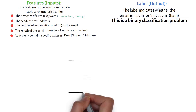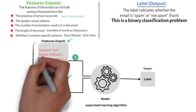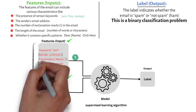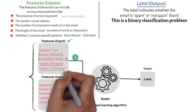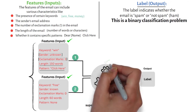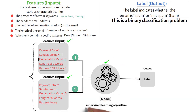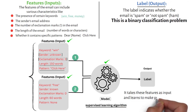Let's illustrate this with a simplified diagram. On the left side, we have two examples of email features — inputs. The first email has certain keywords, an unknown sender, multiple exclamation marks, a longer length, and a specific pattern. The second email has different characteristics. In the middle, we have the model — our supervised learning algorithm. It takes these features as input and learns to make predictions.